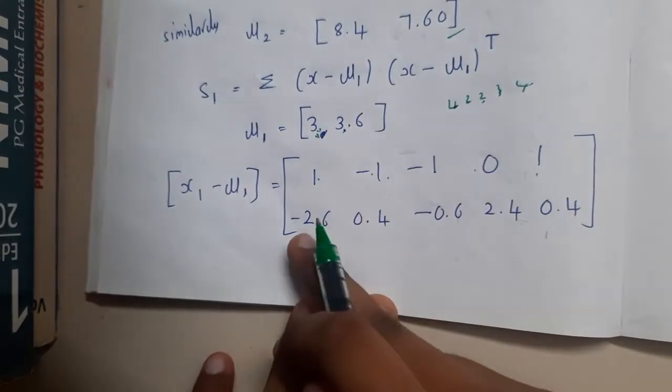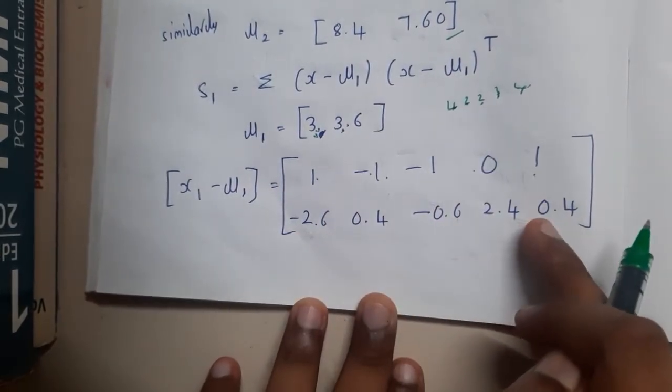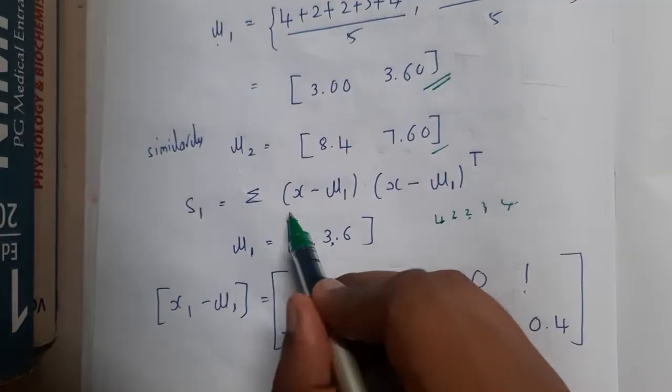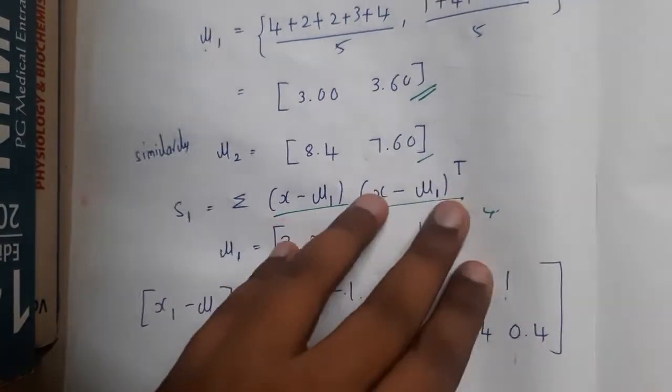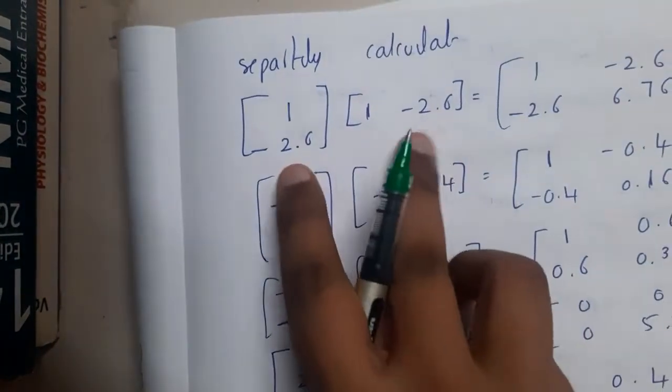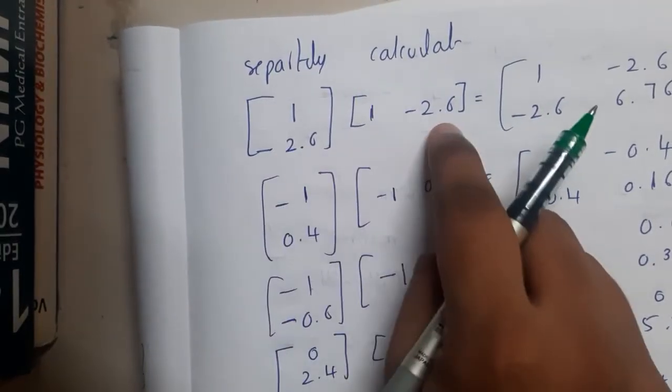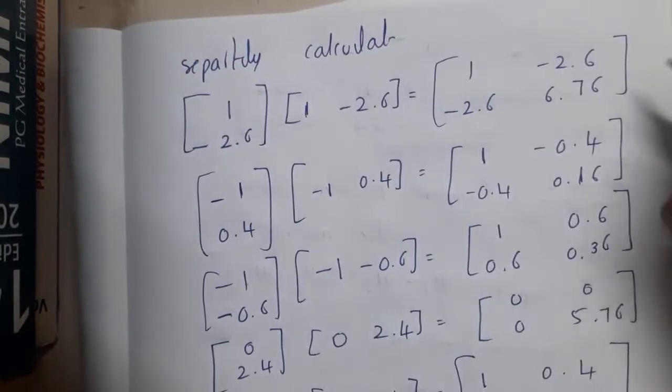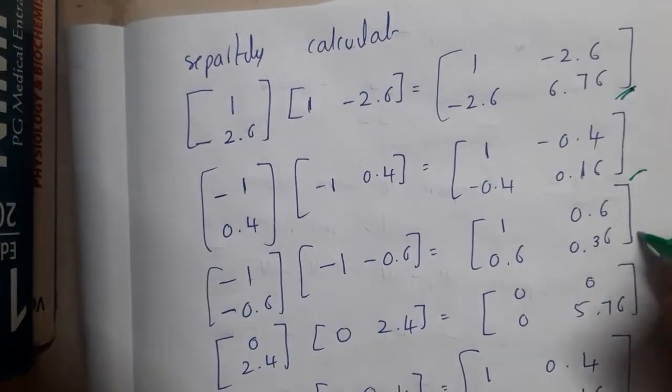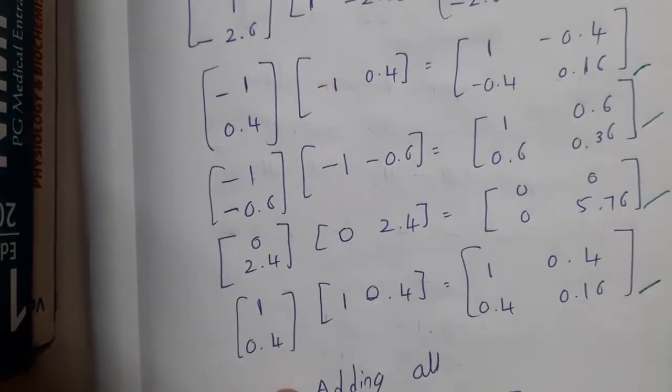So the second row with the 3.6, you will be getting these as the result. If you observe the formula, it is multiplying itself. That is the reason we do step-by-step multiplication. So 1, 1 and minus 2.6 into 1, minus 2.6. You will be doing cross multiplication. You will be getting 2 by 2 matrix.